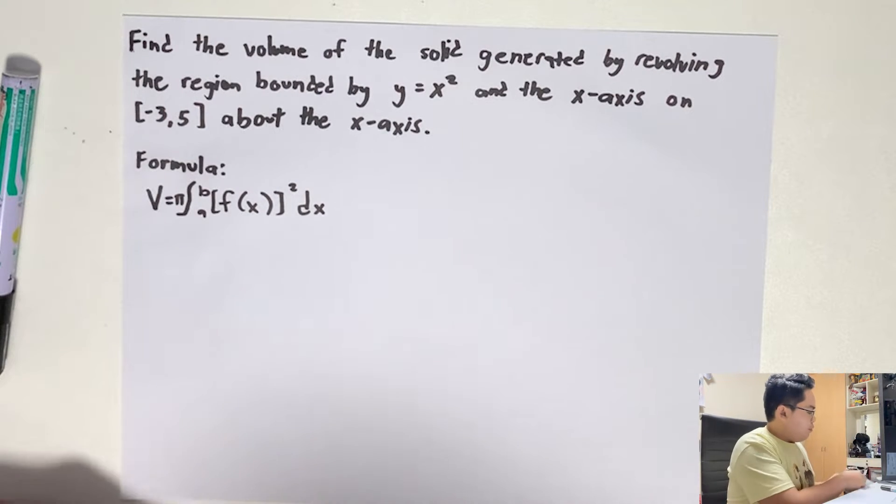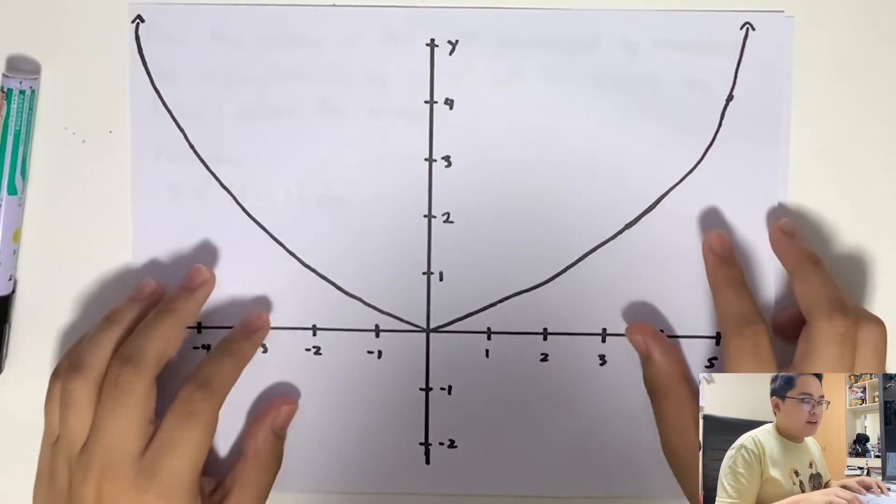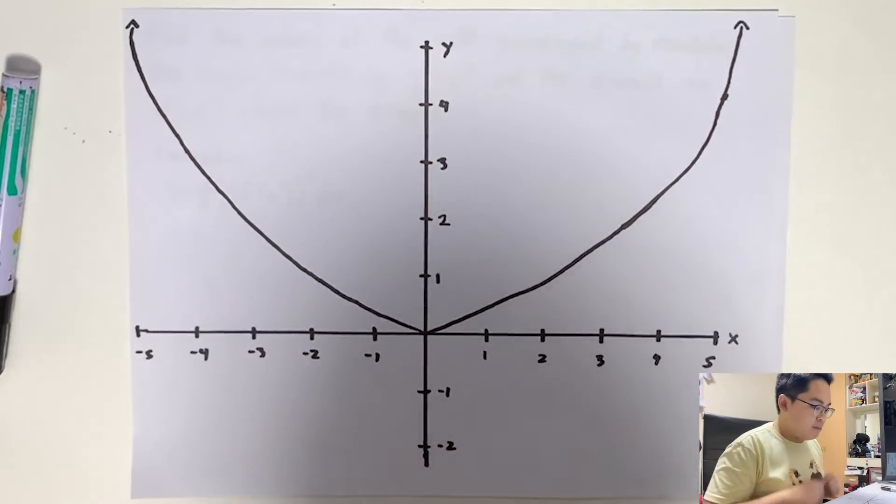So if we form the function in a graph, y = x² is a quadratic equation. Therefore, it forms a parabola.